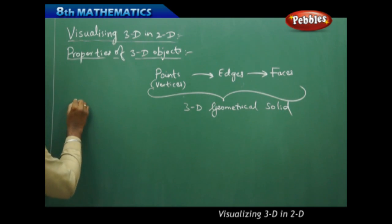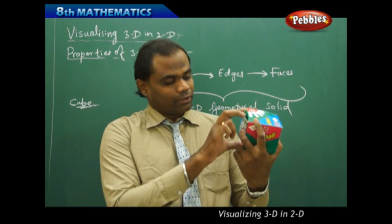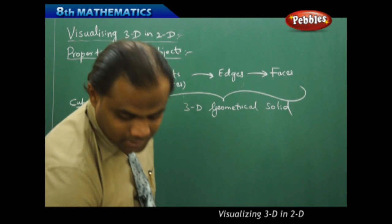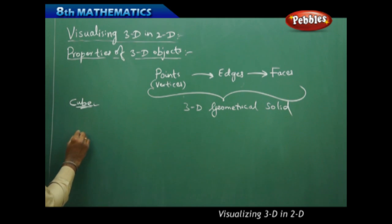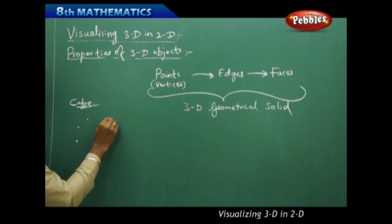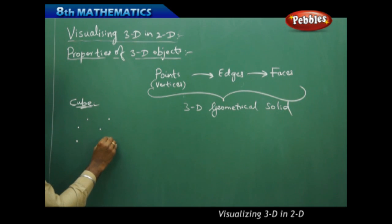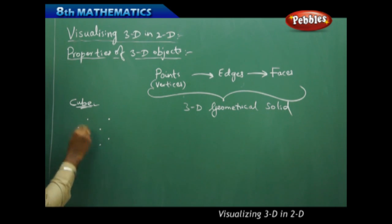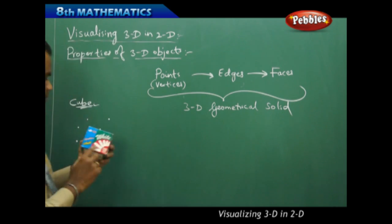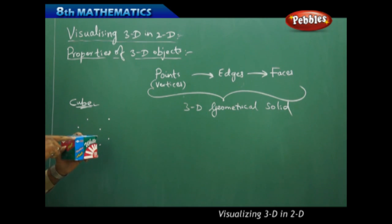Let's construct a cube which is a three dimensional object. We all know this is a sort of a cube where all sides are squares — each of the faces is a square. Before we construct, let's take into consideration the vertices or points. I first take the points which are the vertices.